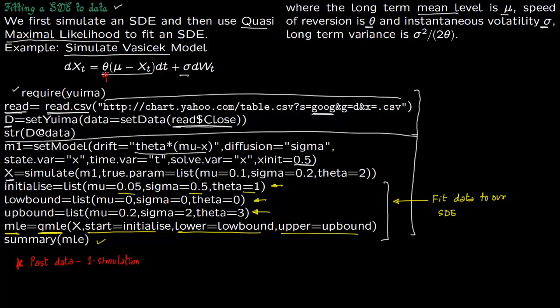So if you have, say, interest rates in the past and you want to find theta, mu and sigma, and you do this maximum likelihood estimation, it might not give you the correct values of theta, mu and sigma. Because the stochastic differential equation which generated that one particular path might not give you the correct estimate, because there could be a thousand such paths or ten thousand such paths which can give you exact value.